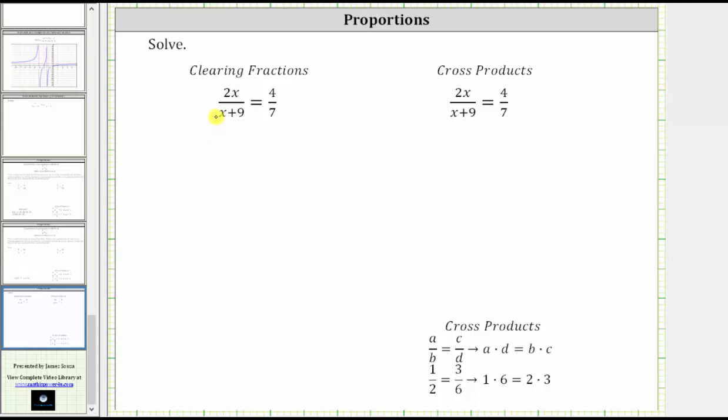We will solve the given proportion using two methods. We will first solve the proportion just like we solve any other rational equation by multiplying both sides by the LCD to clear the fractions from the equation. Then we'll solve the proportion using cross products.